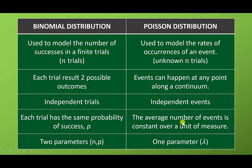The average number of events is constant. For binomial, it has two parameters: n (number of trials) and p (probability of success). For Poisson, it only has one parameter, that is lambda. Lambda is referred to as the mean, average, or expected value.